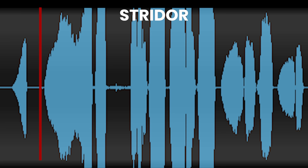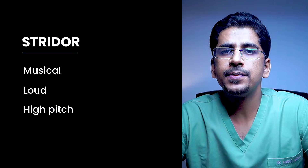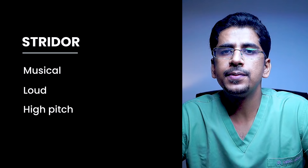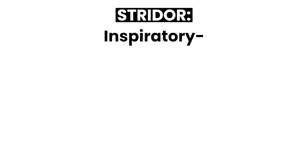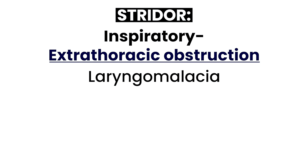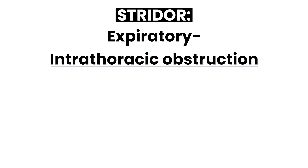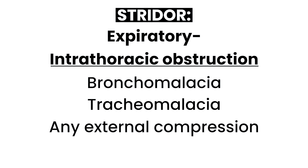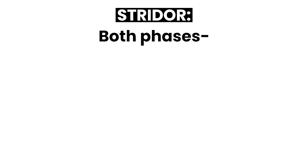Coming on to the next one — stridor. This is how it is heard. Stridor is a musical, loud, high-pitched sound produced mainly because of obstruction in the upper airway tract. If stridor occurs during the inspiratory phase, it suggests an extra-thoracic lesion — for example, laryngomalacia or vocal cord lesions. If it occurs in the expiratory phase, it suggests an intrathoracic lesion — for example, bronchomalacia, tracheomalacia, or external compression. If it occurs in both phases, it suggests a fixed obstruction like tracheal stenosis.